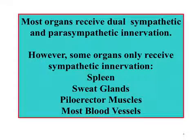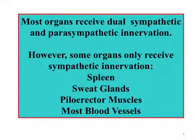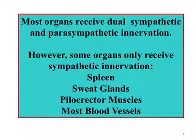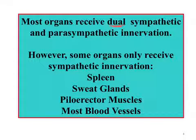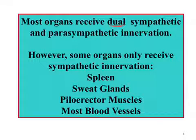Before we dig down into each of the separate systems — sympathetic and parasympathetic — it's very useful to understand how the body organizes and integrates this. Most organs receive dual sympathetic and parasympathetic innervation. However, some organs only receive sympathetic innervation, and those are: the spleen, sweat glands, piloerector muscles in animals, and most blood vessels.